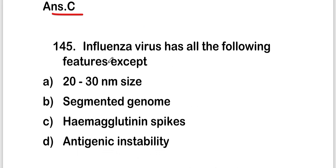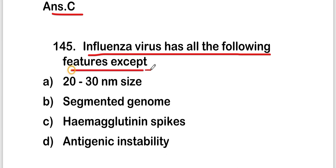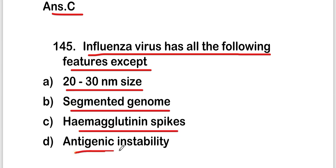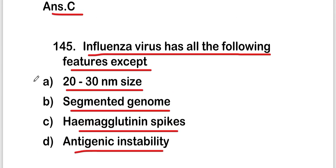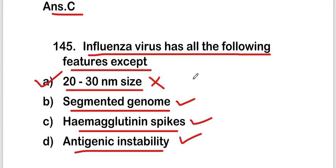The next question is: Influenza virus has all of the following features EXCEPT — 20 to 30 nanometer size, segmented genome, hemagglutinin spikes, or antigenic instability? The right answer is option A, that is 20 to 30 nanometer size. Influenza virus has a segmented genome, hemagglutinin spikes, and antigenic instability, but does not have 20 to 30 nanometer size.